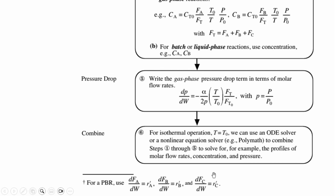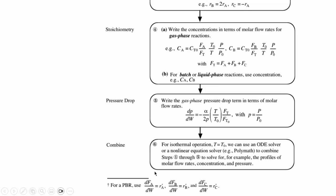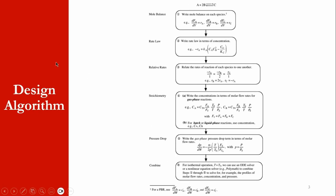For PBR, remember we have to use rA' or rB' or rC' because the unit of rA are mole per volume per time, while for PBR it will be mole per gram of catalyst per time. This is the overall design algorithm for chapter number 6.